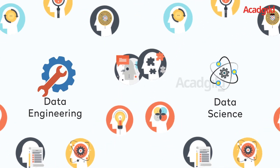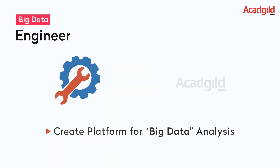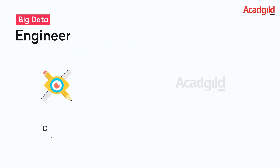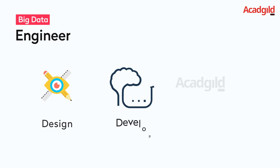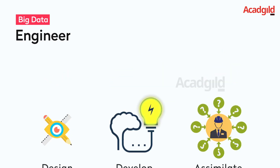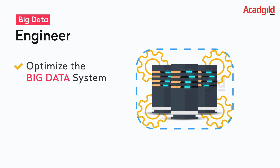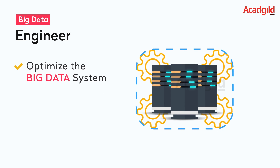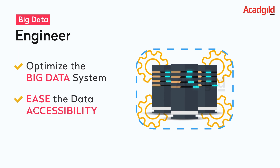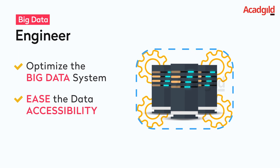Nevertheless, following are the basic differences. Big data engineers create a platform for big data analysis. They usually design, develop, and assimilate data from various resources. The chief responsibility of data engineers is to optimize the big data system, including the creation of a data warehouse to ease data accessibility for analysis.